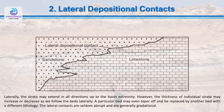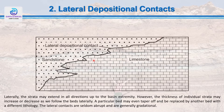When beds are deposited in a horizontal manner, they also extend laterally in all directions up to the basin extremity. However, the thickness of individual strata may increase or decrease as we follow the beds laterally. A particular bed may even taper off and can be replaced by another bed with different lithology — this is the lateral contact. Lateral contacts are never abrupt; they are generally gradational, as we can see in this particular diagram.